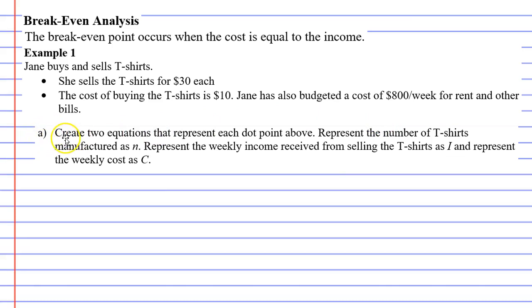Looking at question A, it says create two equations. And these equations are going to represent each dot point above. So an equation for dot point one and an equation for dot point two. It says represent the number of t-shirts manufactured as the pronumeral N. Represent the weekly income received from selling the t-shirts as I. And represent the weekly cost as C.